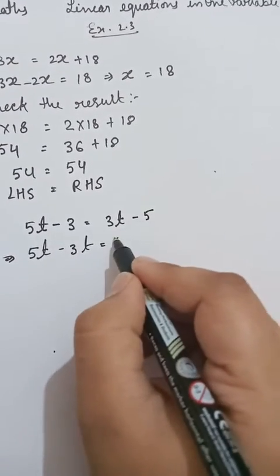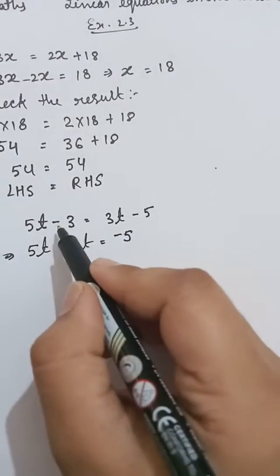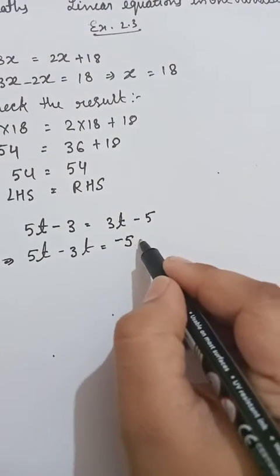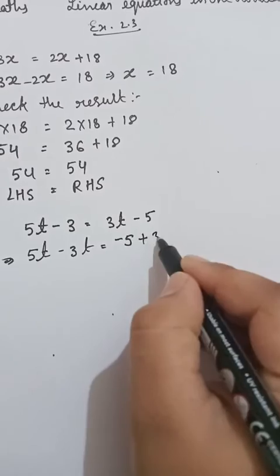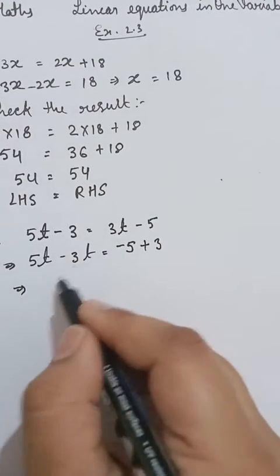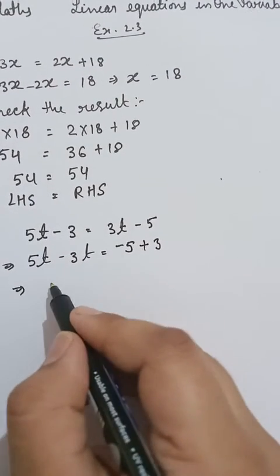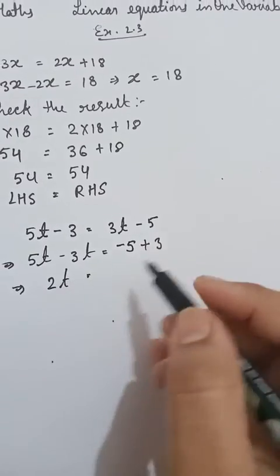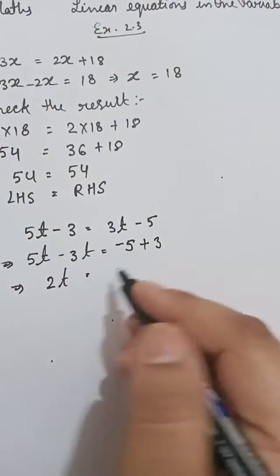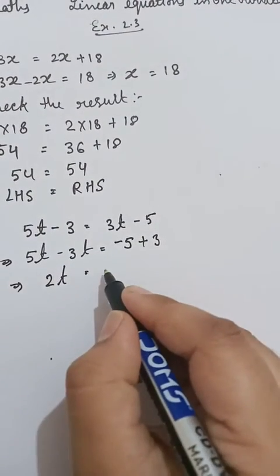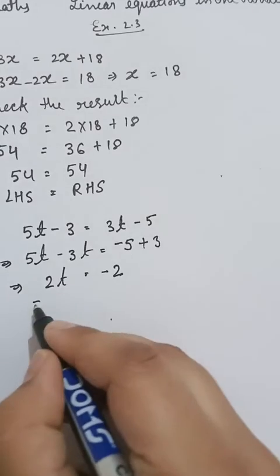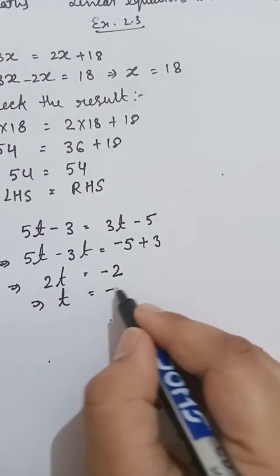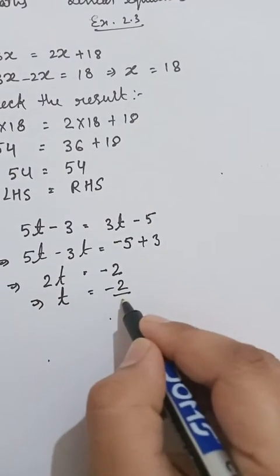Transposing 3t to the left side gives 5t minus 3t, and transposing minus 3 to the right gives minus 5 plus 3, which simplifies to 2t = minus 2, so t = minus 1.